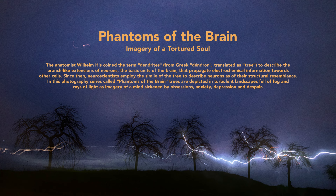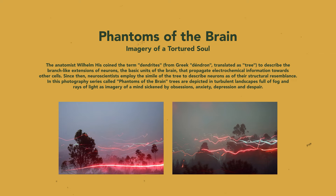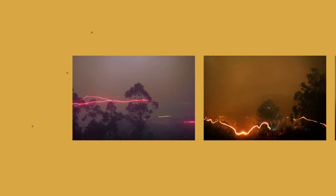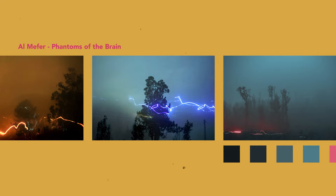I want to show you one more series by Almefair called Phantoms of the Brain. In his description he writes about findings by the anatomist Wilhelm His, who explains that the brain is like a tree because of the neurons which extend like branches of a tree. Almefair makes use of this visual metaphor and creates a photography series of trees in turbulent weather conditions surrounded by fog and light rays, to illustrate a mind sickened by obsessions, anxiety, depression and despair. When we look at the photography created around this theme I think we can feel the states of mind he portrays — the mind is unclear, cluttered. The light rays represent flashes of mental pain in this mind which appear sporadically.